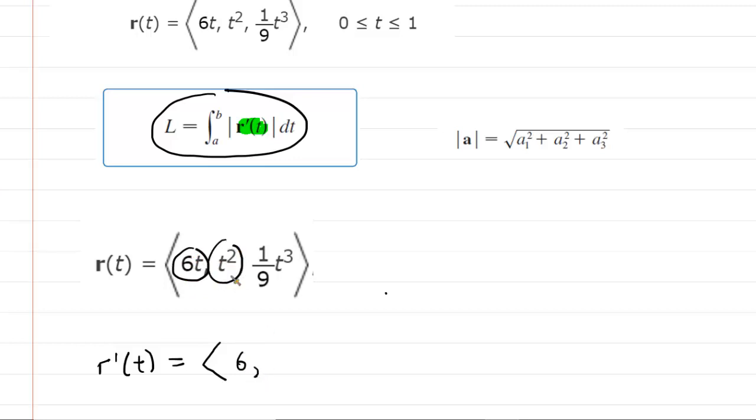We have t squared. We'll use a basic power rule there. So the derivative of t squared is 2t. And then here, again, power rule, we're going to multiply 3 by 1/9, which is 3/9. That reduces to 1/3. And then we have t to the power of 2. So there is the derivative of our vector function.